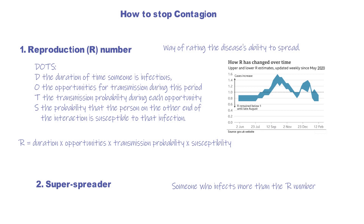Not only can diseases be contagions, but also a lot of other things — such as popular books, movies or music, economic crises, or trending topics. They all fall into the category of contagions. Knowing that gives us a fresh angle to look at events; we can use the model to simulate them, or apply the idea of R number and super spreaders to stimulate or cool down a trend.